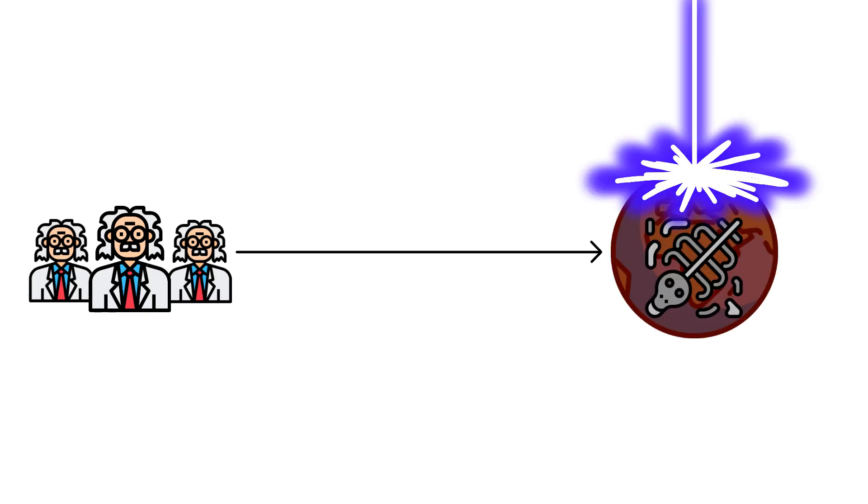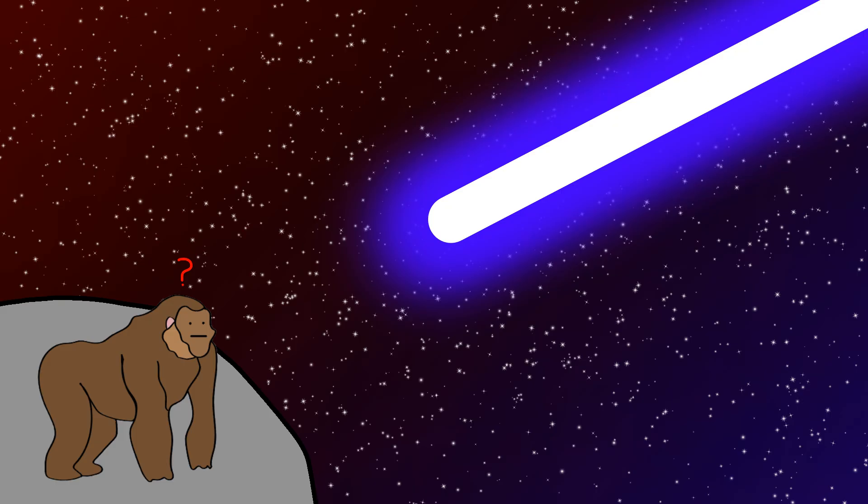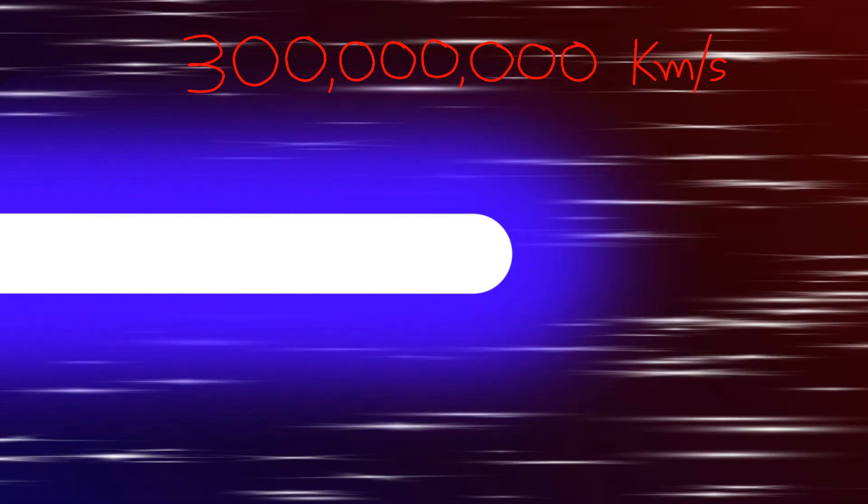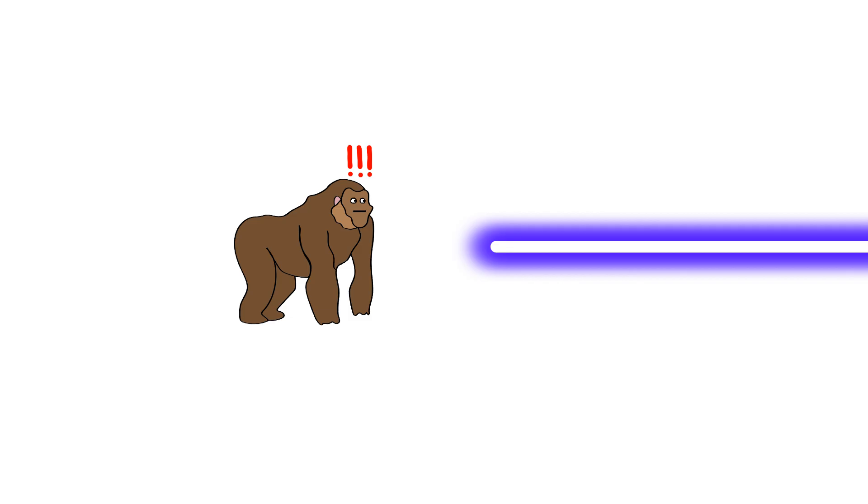Some smart humans think a gamma ray burst might have caused mass extinctions on Earth before. Worst part? Monkey can't see them coming. They arrive without warning, traveling at the speed of light. By the time monkey detects a gamma ray burst, monkey is already dead. It's like the universe's ultimate sniper rifle, and every planet in the cosmos is a potential target.